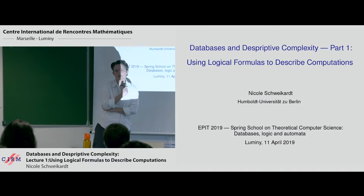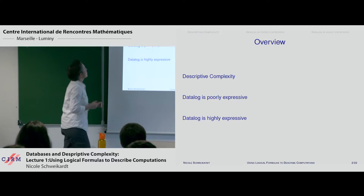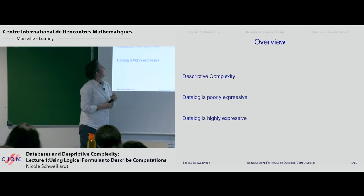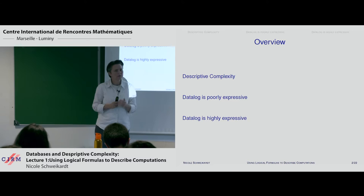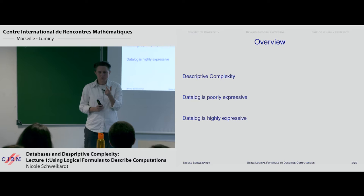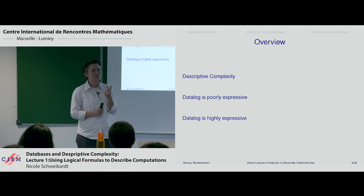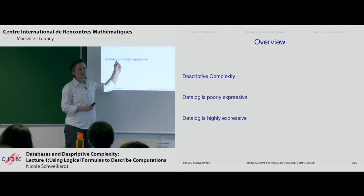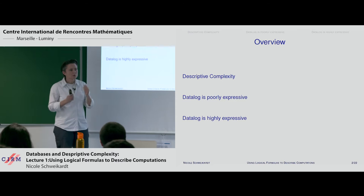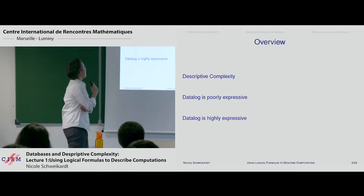In this first part, it's on how to describe computations by logical formulas — descriptive complexity. We'll first look at how datalog can describe computations. The first part on datalog shows that datalog is poorly expressive. In German we say 'this person cannot count to three' to mean they're really dumb — datalog cannot even count to two. On the other hand, its data complexity is P-time complete, its combined complexity is EXP-time complete, and it can express all P-time computations when you have the right view on datalog.